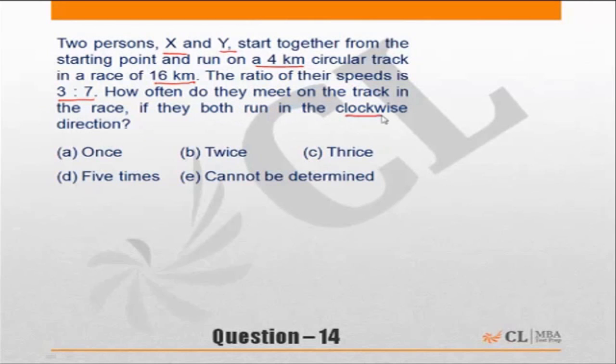both run in the clockwise direction? As per the question, we have a circular track of 4 kilometers. We have a 16-kilometer race, which means there have to be 4 rounds of this race by the faster person. The ratio of speeds of X and Y, both of whom go in the clockwise direction, is X